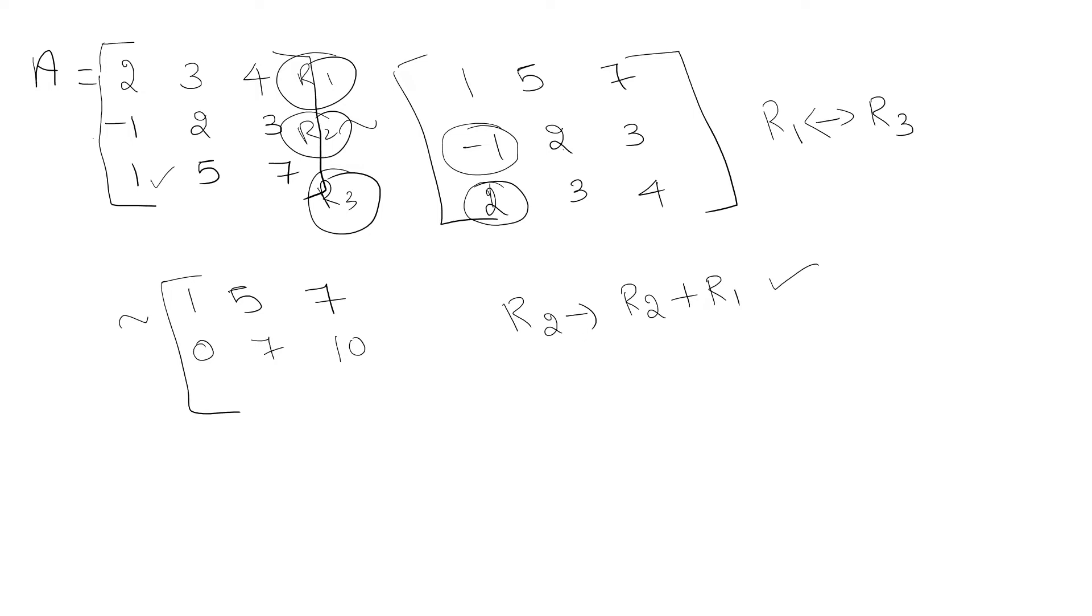I am going to make this as 0. This is 2, so 2 minus 1 times 2. If I do that, this will become 0. What I am going to do is R_3 → R_3 - 2R_1. So 2 minus 2×1 will give you 0, and here we have 3 minus 2×5.